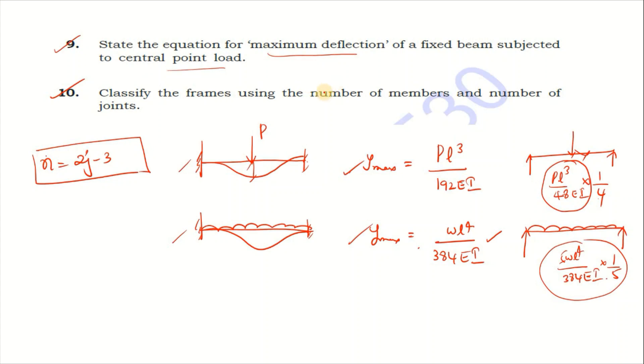The formula n = 2j - 3, where n is number of members, j is number of joints. If n equals 2j - 3, this equation satisfies a perfect frame. If n is not equal to 2j - 3, then it is an imperfect frame.